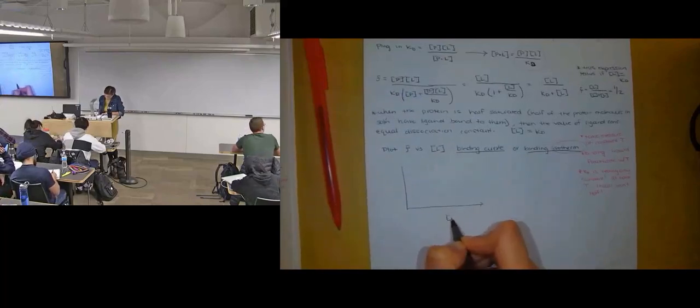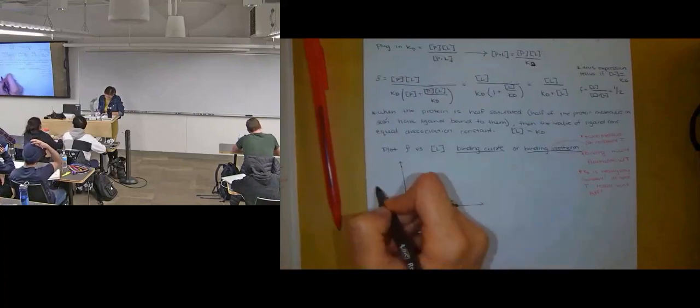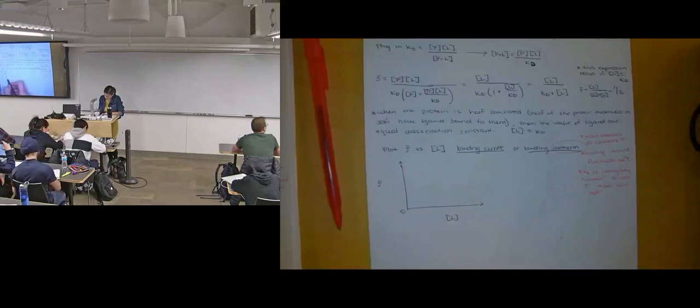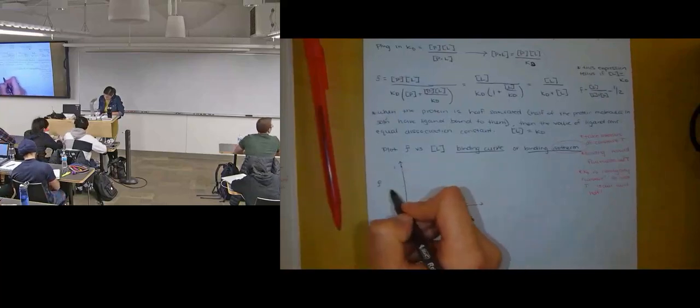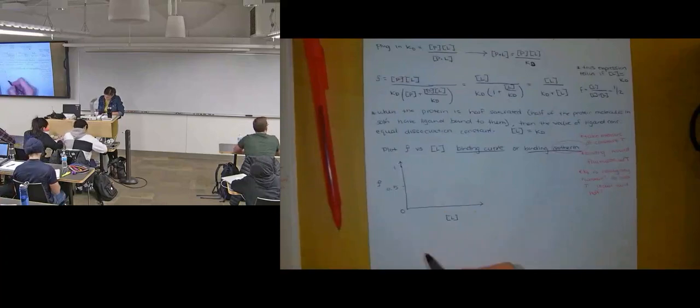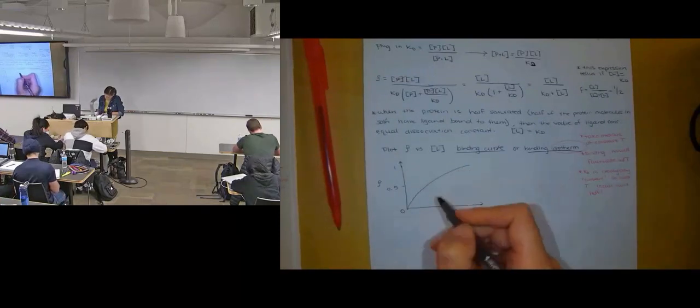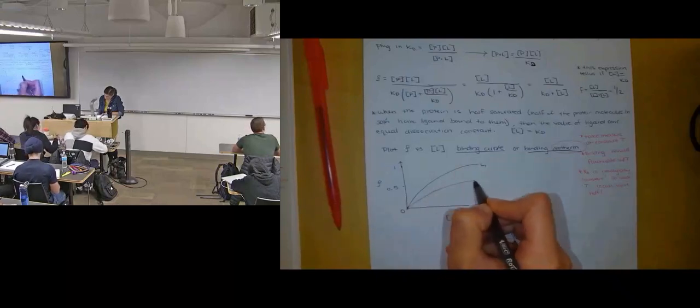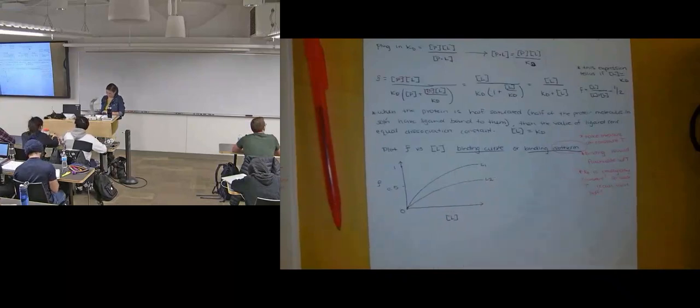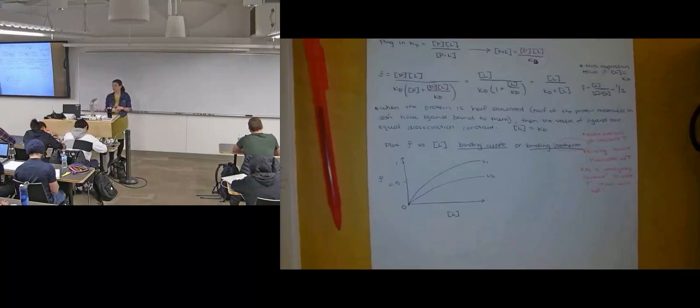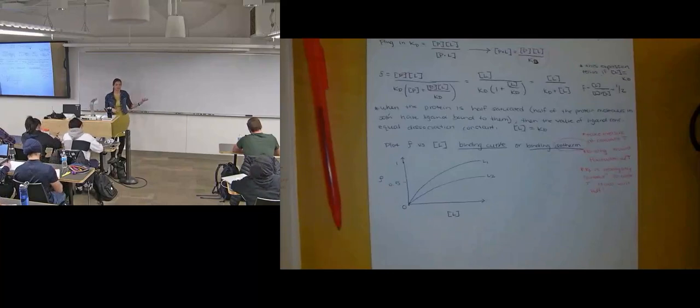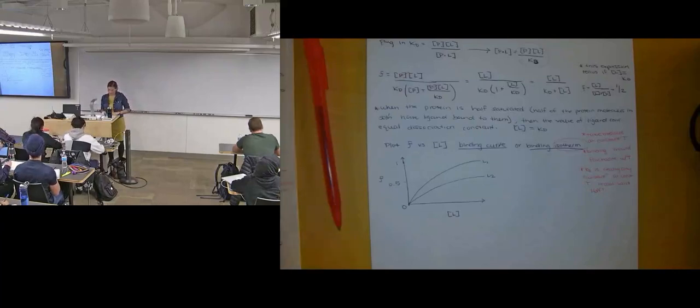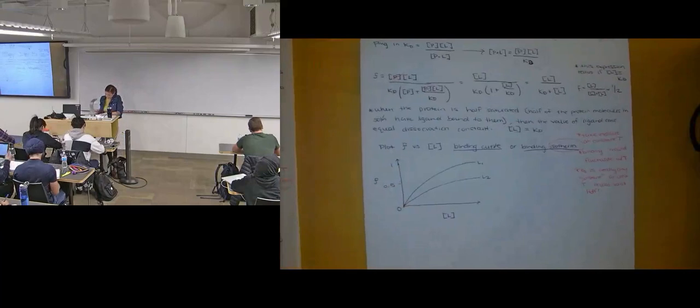We have concentration of our ligand here, fractional occupancy here. So down at the bottom we have zero, at the top we have one, and then we have our half saturation. We have a couple different curves - ligand number one for our receptor and ligand number two. This is what we would collect if we had some solution of protein and were varying our concentration of ligand and measuring some output parameter, whether it be spectroscopy, radioactivity, whatever. We could construct a curve like this.